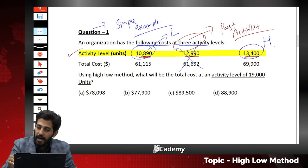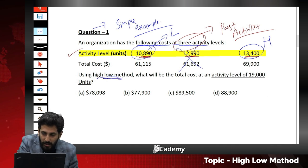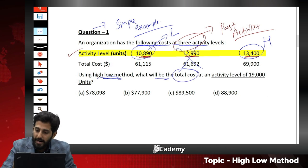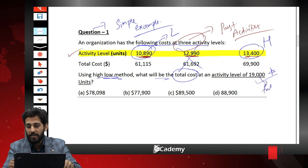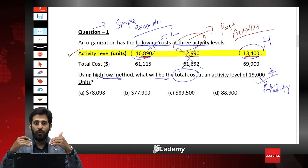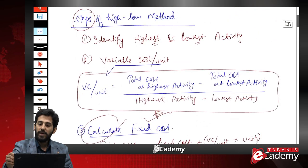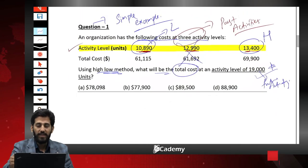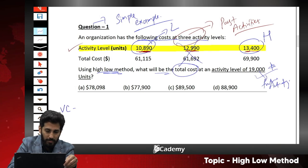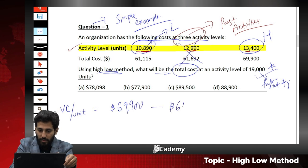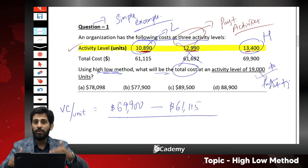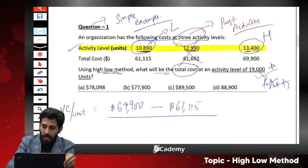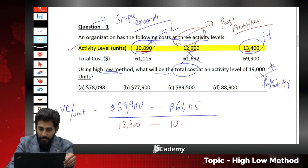Using the high-low method, we need to find the total cost at a future activity level of 19,000 units. Applying the variable cost per unit formula: (69,900 − 61,115) ÷ (13,400 − 10,890). Cost is in the numerator and units in the denominator.